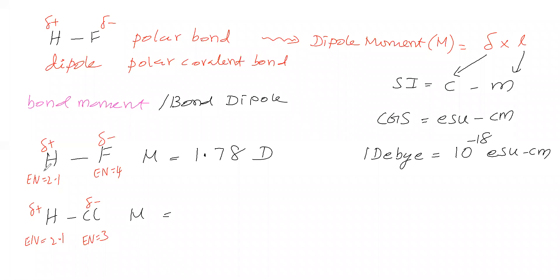The electronegativity of hydrogen in HF is certainly different from other compounds. Hydrogen bonds with carbon, oxygen, nitrogen, and many elements, and its electronegativity would differ in each case. So we cannot give a separate electronegativity value for hydrogen for every compound — that is why a standard table value is used.